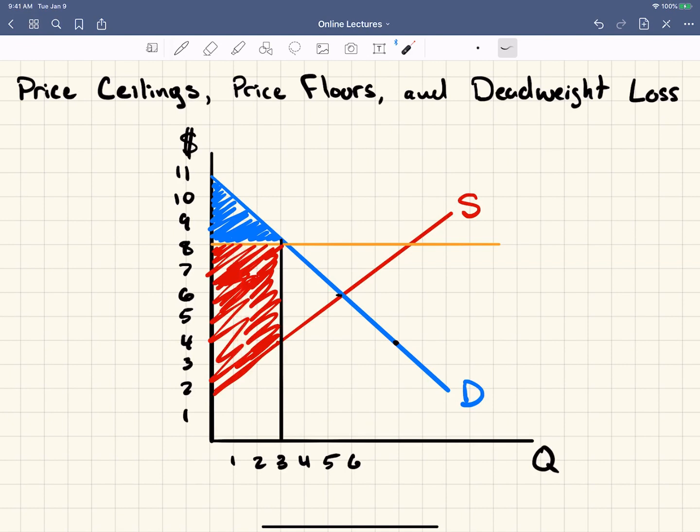But notice the amount that producer surplus got bigger is not as much as consumer surplus got smaller. And this is because this whole area of this triangle used to be total surplus. But now this triangle represents transactions that never happened, efficiency in the market that's gone.